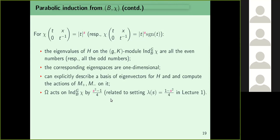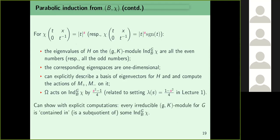Now I can finally explain why s^2 - 1/4 appears. If chi(t x; 0 t^{-1}) = |t|^s or |t|^s · sign(t), then the Casimir omega acts on the induced representation by s^2 - 1/4. This is exactly related to 1 - s^2 by 4 from before, explaining why we wrote the Laplacian eigenvalue as s^2 - 1/4 rather than simply s. And every irreducible (g,K)-module for G is contained in some induced representation.